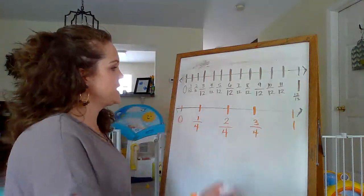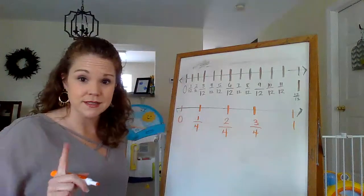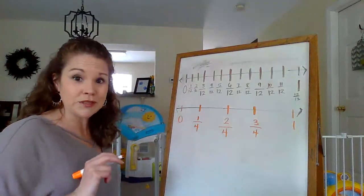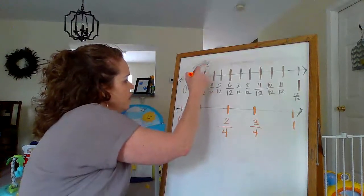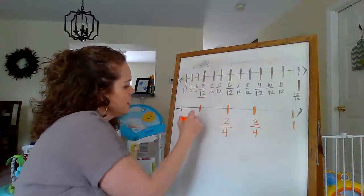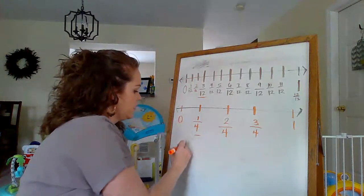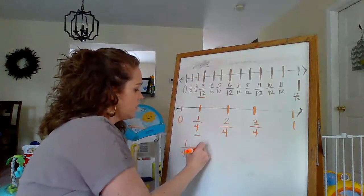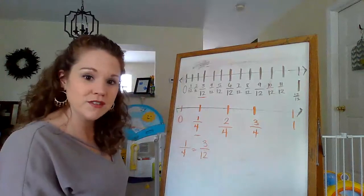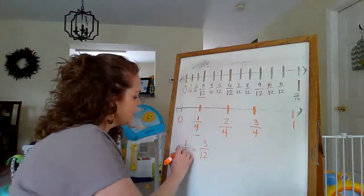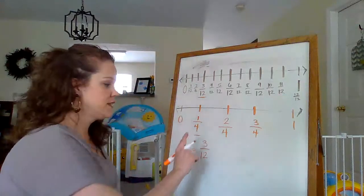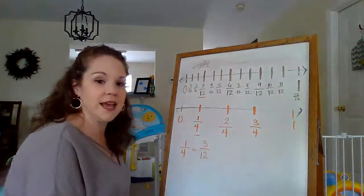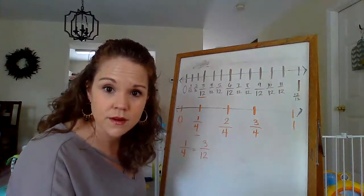So if I'm asking what fourths are equivalent to twelfths, I could take a look and say, and then I can test it because we learned about simplified fractions. Well, let's start here. So here I look and it looks like 3 twelfths and 1 fourth line up. 1 fourth equals 3 twelfths. Well, let's see if that's true. Is there something, remember I can multiply the top and the bottom by and I should get the same, it should work. Okay.